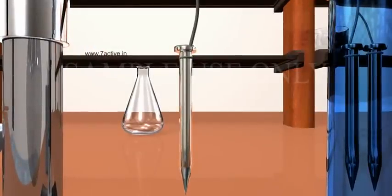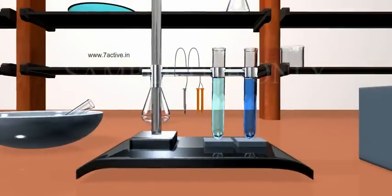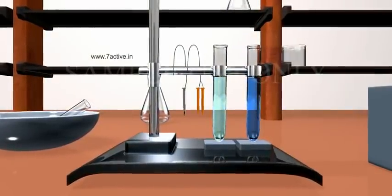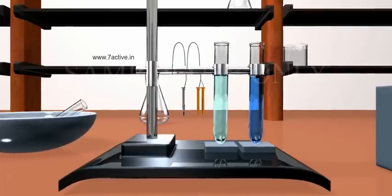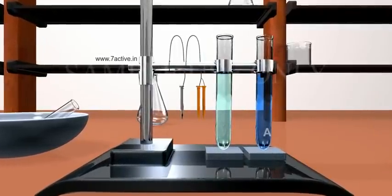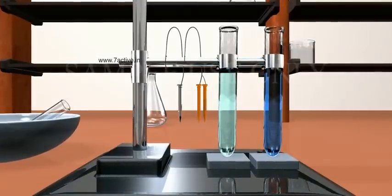After 20 minutes, take out the iron nails from the copper sulfate solution. Compare the intensity of the blue color of copper sulfate solution in test tubes A and B. Also compare the color of the iron nails dipped in the copper sulfate solution with the one kept aside.